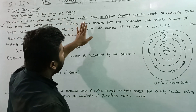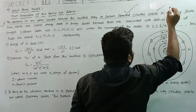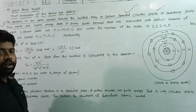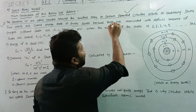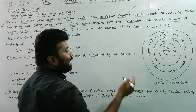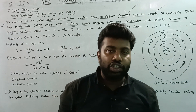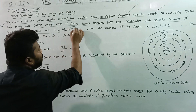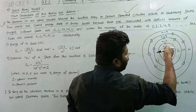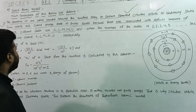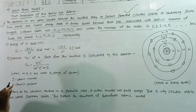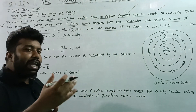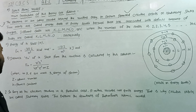The electron in an atom revolves around the nucleus only in certain permitted circular orbits or stationary states, which are called energy shells or energy levels. These are associated with a definite amount of energy. Each shell — K shell, L shell, M shell, and N shell — has a definite amount of energy. The shells are numbered as shell number 1, 2, 3, and so on, corresponding to K, L, M, and N respectively.